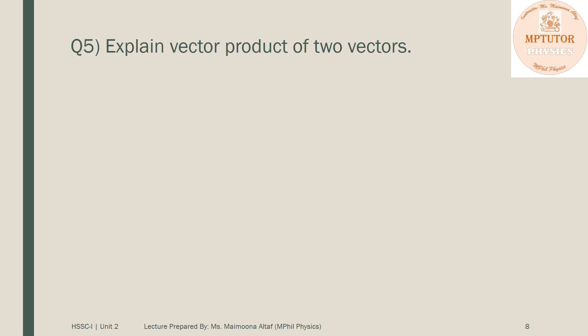Question number five is: explain vector product of two vectors. This question is given in your book on pages 37 and 38. You have to write the complete topic 2.7.2 along with figure 2.20.